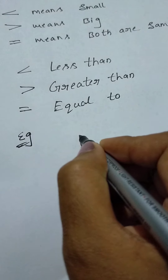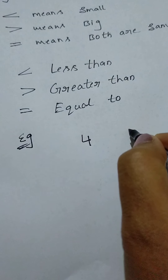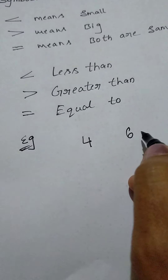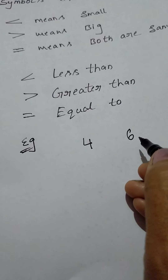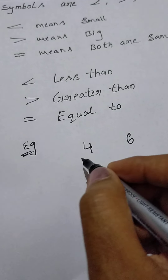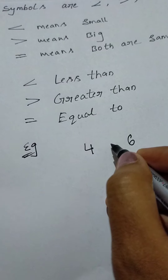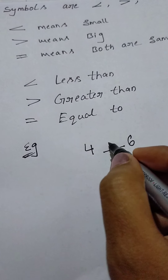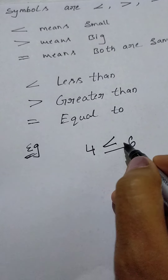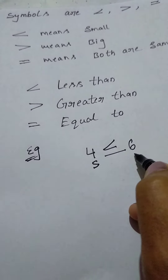I will give you examples of these symbols. First one — what is this? Less than. I will give you an example of less than. Take the two numbers: 4 and 6. Which one is the smallest of these two numbers? Comparing these two numbers — which one is smallest, 4 or 6? 4 is the smallest number.